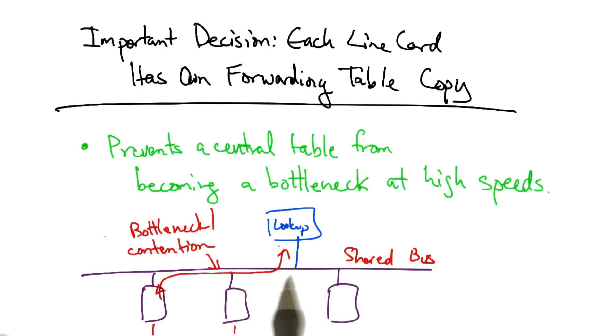But this shared bus introduces a bottleneck, as well as contention between the different line cards that may all be performing lookups to the same shared memory.